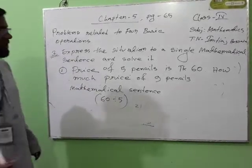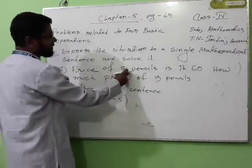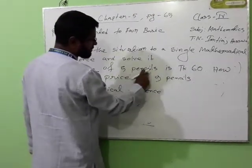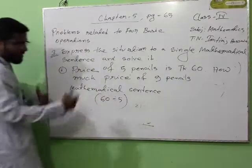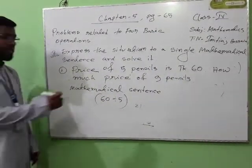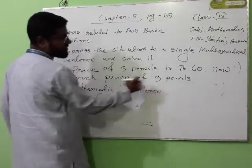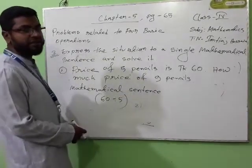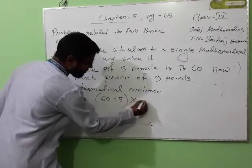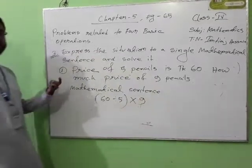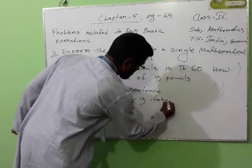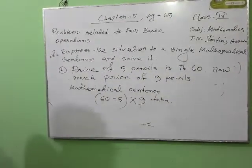Am I right? So in the problem, price of five pencils is 60 Taka — one pencil price is 60 divided by five. I have written it in one line. So this is the amount of one pencil. I need to find out how many pencils? Nine pencils. So nine pencils I need to multiply. Then I can get the answer. This is the single mathematical sentence.